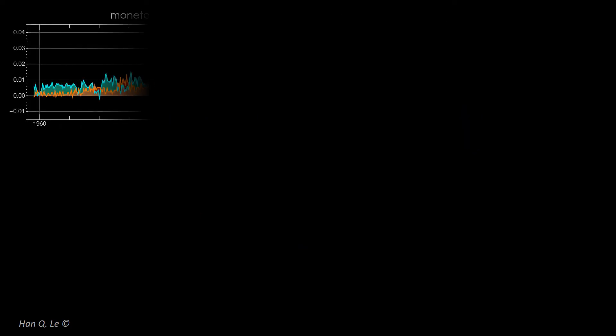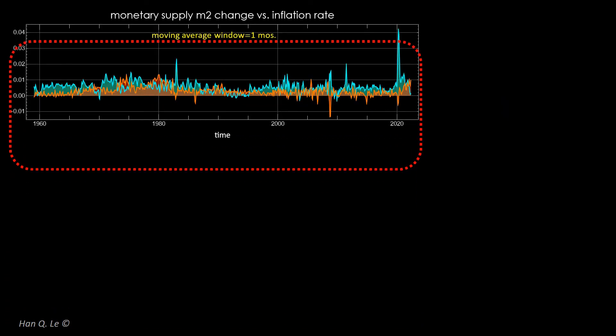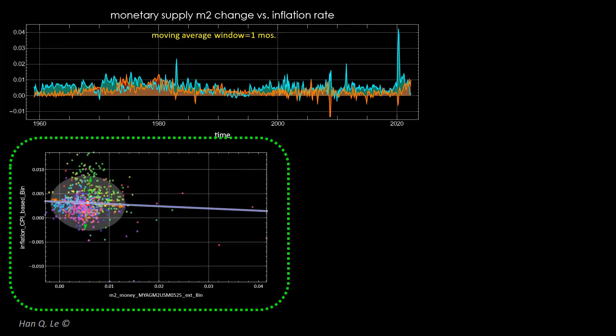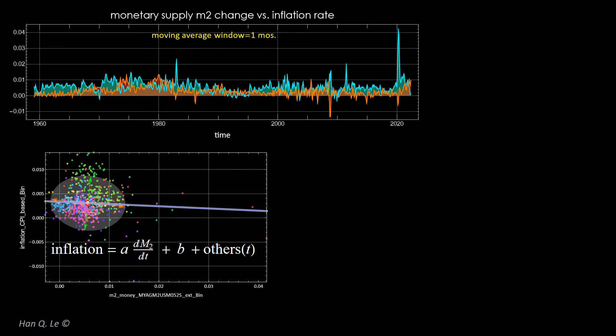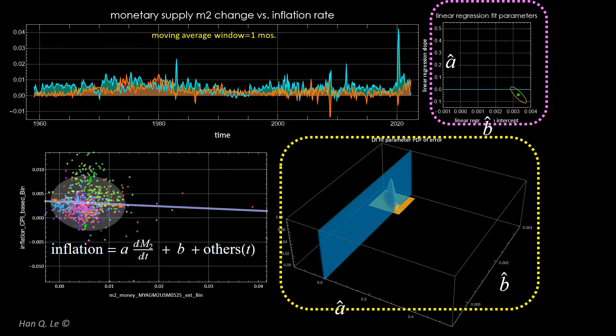First consider raw data without any processing. The top left chart shows M2 change and the inflation rate. The lower left chart is the data scatter plot with the linear regression result. The shaded region is the two times covariance ellipsoid. Its axes, shown by the arrows, are nearly parallel with the X and Y axes, confirming the earlier visual speculation that the two variables, as is, are uncorrelated. The best fit straight line is indeed horizontal, and its estimated slope, A hat, is very near zero.